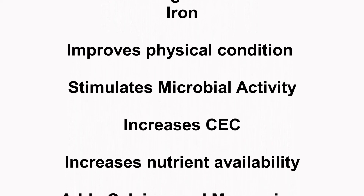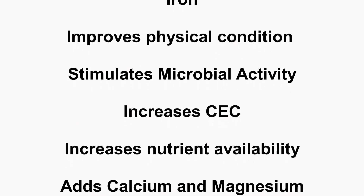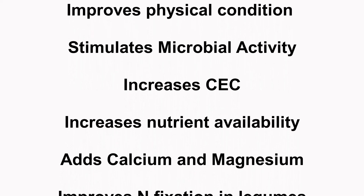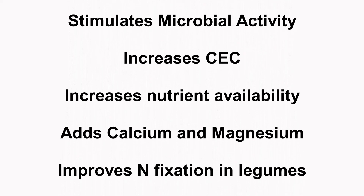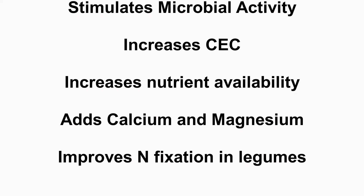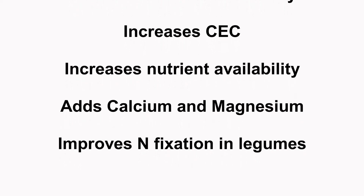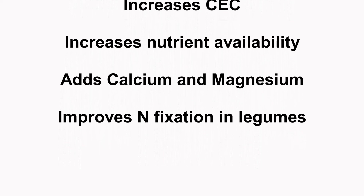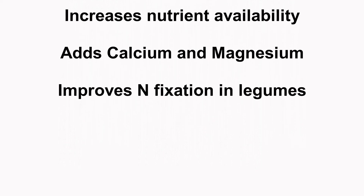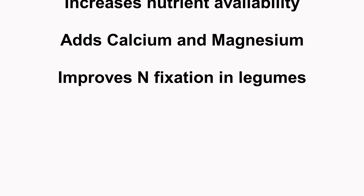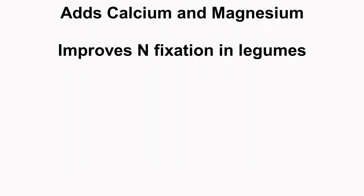Lime increases the nutrient availability of several key nutrients, including nitrogen, phosphorus, calcium, magnesium, sulfur, and boron, and itself supplies calcium and magnesium. And it improves nitrogen fixation by legumes.